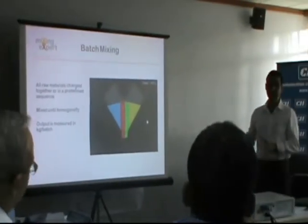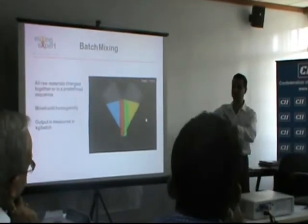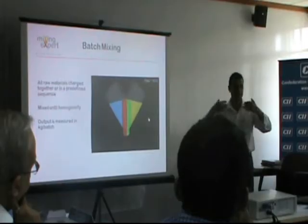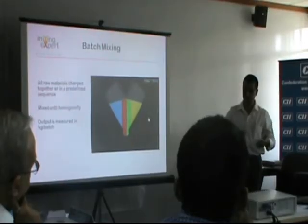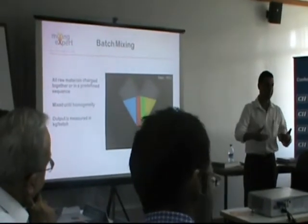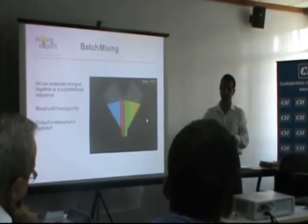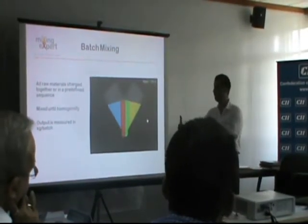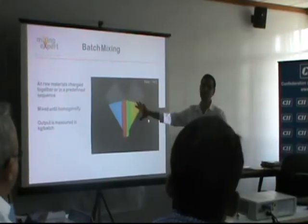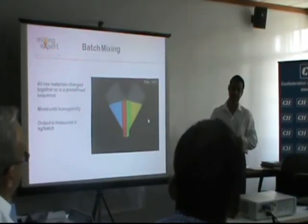In a batch mixing process, all the materials are first charged into the mixer. They are run for a specific amount of time. After the mixing is completed, the batch is discharged and we move on to the next batch. The output of a batch mixer is measured in kilograms per batch.